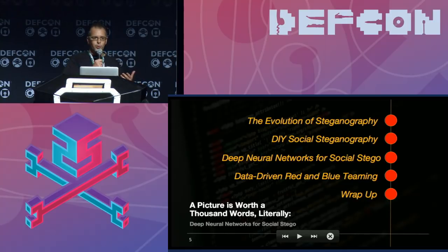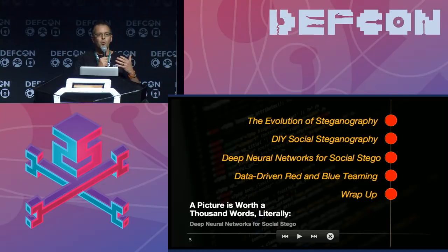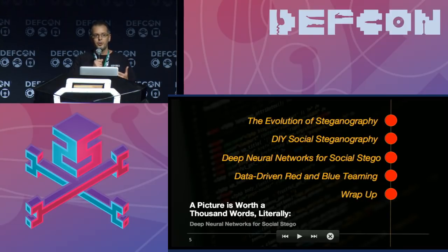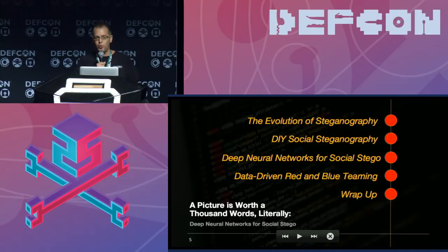Our agenda is to go through the evolution of steganography and bring you up to speed, really focusing on everything that led up to our idea around using social media for covert communications and some of the cool research that inspired our work. We'll get into DIY social stego, walk through the testing we did to vet out various methods for hiding data across social media images, audio, and video, and the different insertion techniques we employed. Then Phil will get into deep neural networks for social stego, red and blue teaming approaches, and we'll collaborate on real-world use cases.